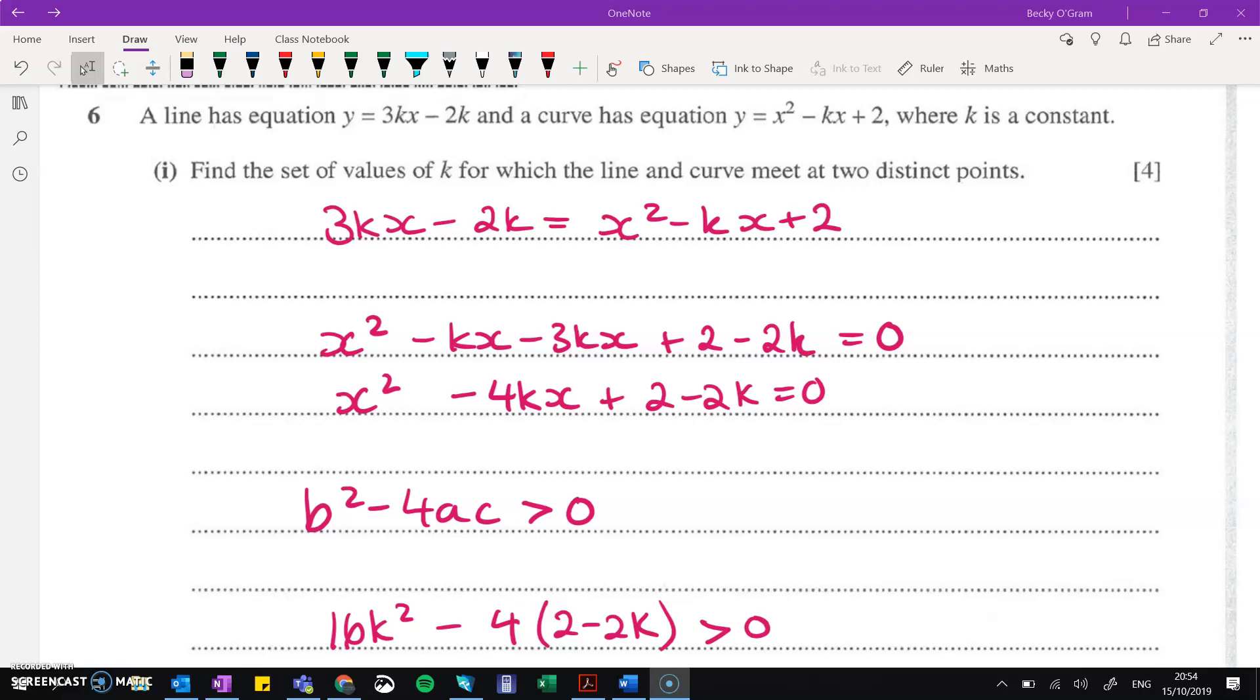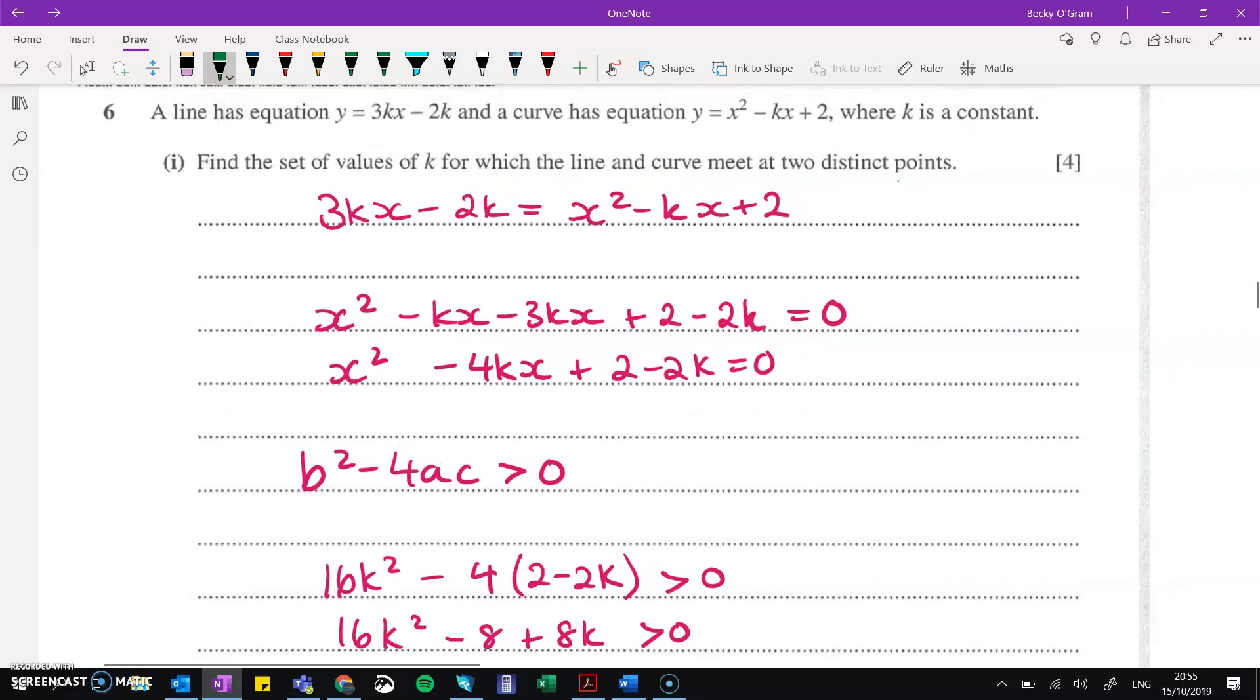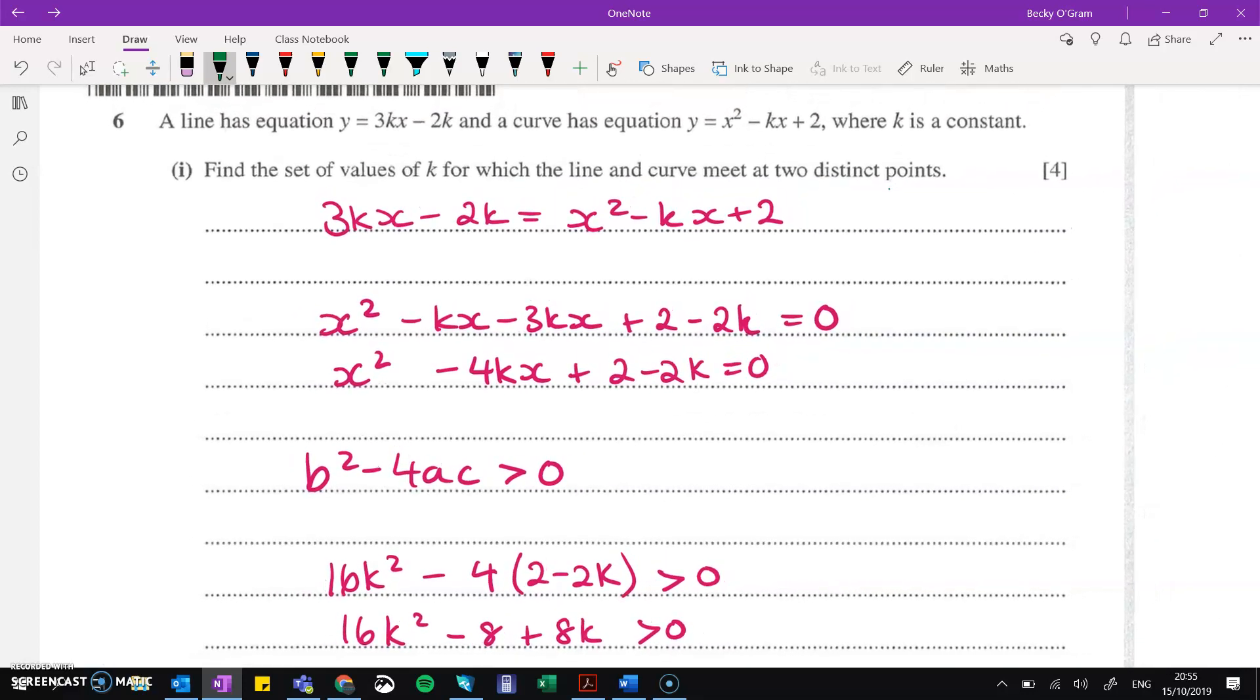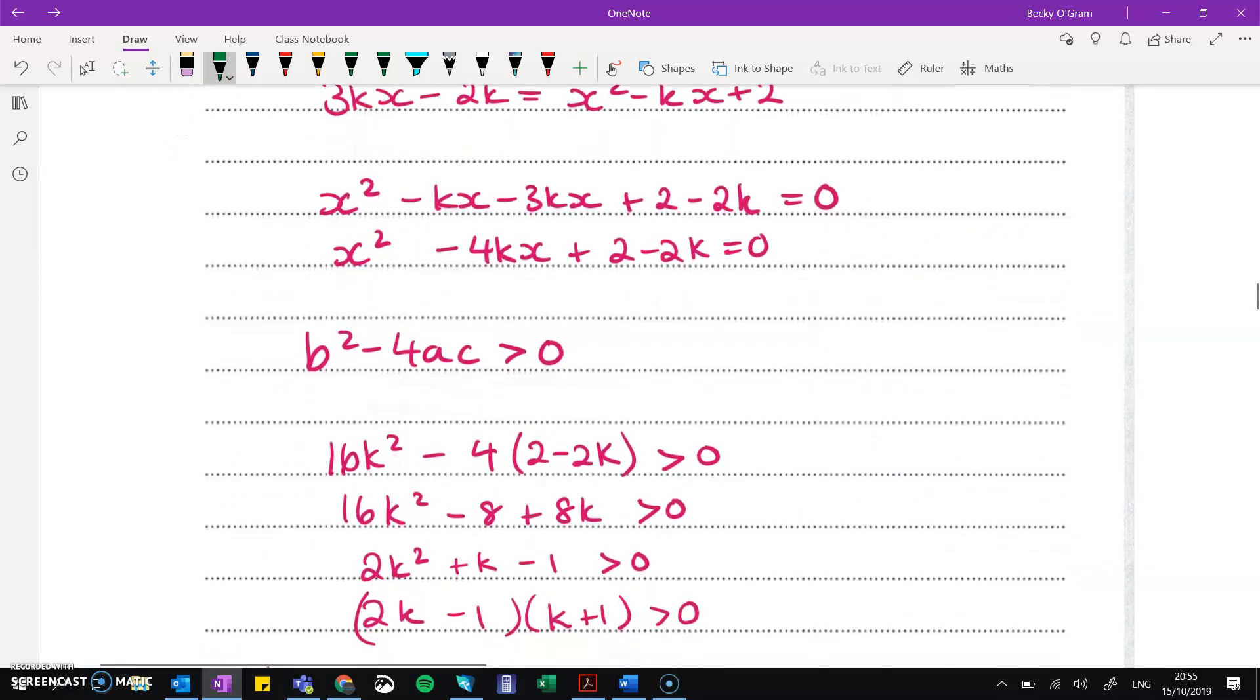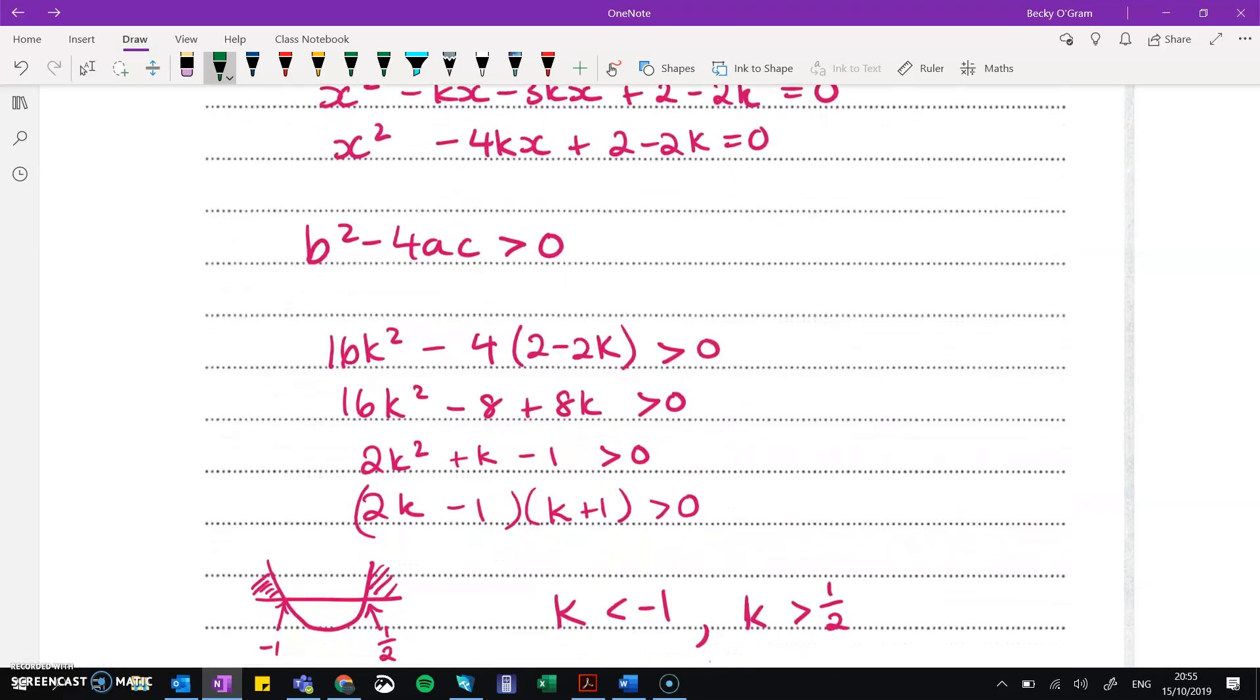So question 6 is fairly straightforward, but it's got a lot of places that you can make mistakes in it. So you just need to be quite careful. We've got a line and a curve. And we want to know what values of k will work so that we get two distinct points of intersection. So this means we set the two lines equal to each other. We're looking to find points of intersection, move everything over to one side. So we have an equation equal to zero. And then we have to set the discriminant greater than zero to get two distinct points. Make sure it's greater than, not greater than or equal to, because equal to would make a tangent. We want two distinct points, not just that they intersect. So pop in the values of b² - 4ac into our equation and we get a quadratic in k.